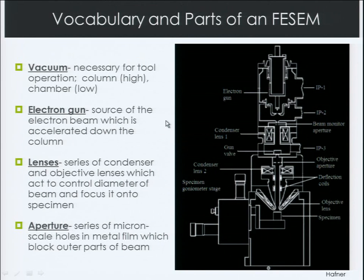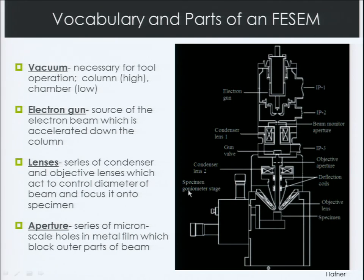Vacuum is a necessary component for this tool's operation. The column — basically the upper half of the tool — has a high vacuum around 10 to the negative 11 torr. The chamber, the bottom half, has vacuum levels around 10 to the negative 5 torr. The electron gun up top provides the source of the electron beam, which is then accelerated down the column. There are condenser lenses and an objective lens to control the diameter of the beam and focus it onto the specimen. There are also apertures — micron-sized holes in a metal disc or electromagnetic apertures — which block the outer parts of the beam and let the central part continue down the column.